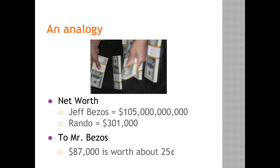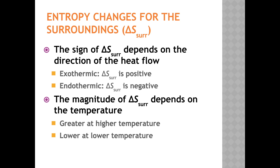To summarize: the sign of delta S for the surroundings depends only on the direction of heat flow. If it's an exothermic process, the surroundings gain kinetic energy and delta S is greater than zero. If it's an endothermic process, the surroundings lose kinetic energy and delta S is less than zero. The magnitude of the change in entropy for the surroundings depends on the temperature, because the transfer of a given quantity of heat produces a much greater percent change in the randomness of the surroundings at a lower temperature than at a higher temperature.